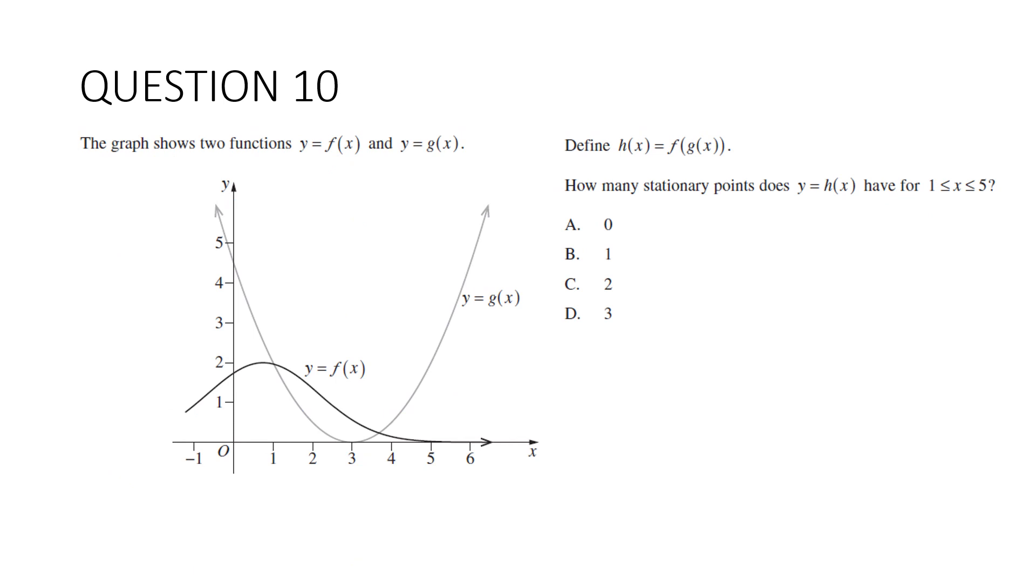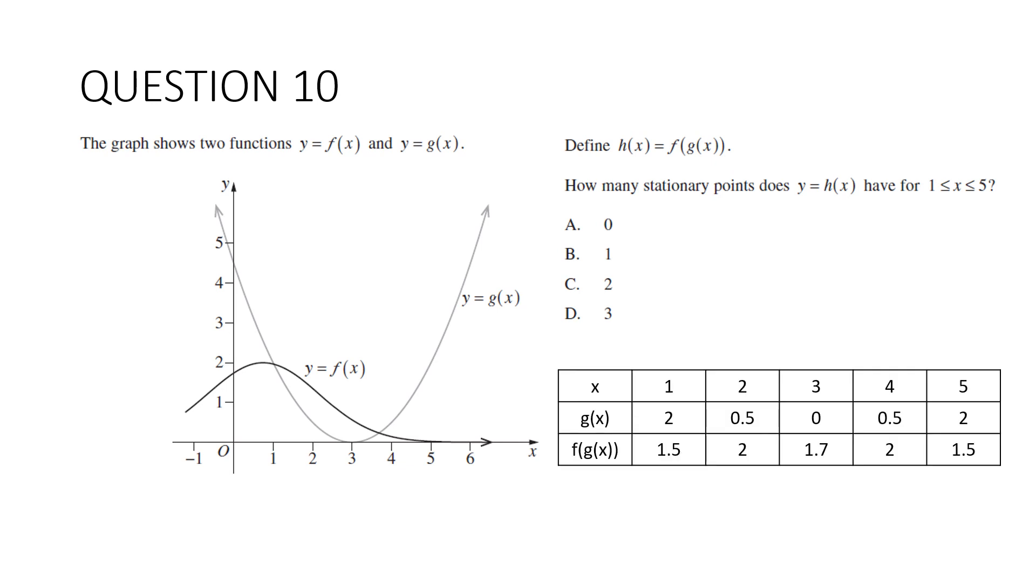Question 10: The graph shows two functions, y equals f(x) and y equals g(x). Define h(x) to be the composite function f(g(x)). How many stationary points does h(x) have between 1 and 5? Now, it's probably many different ways you could do this question, but I just did a guess and check approach, which of course is a very valid mathematical strategy. I've just taken the integer values of x, substituted them in to find g(x). So for example, putting in x equals 1, I'm looking at the lighter color curve here, g(x) is approximately 2. Put 2 in, it's about a half, 0, a half, 2.